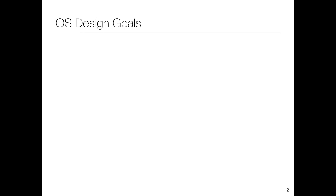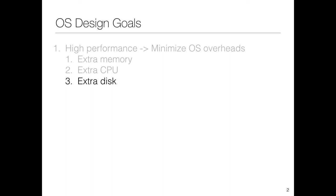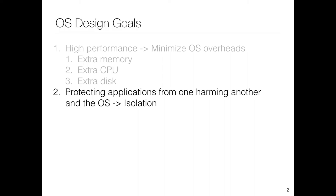So let's say you want to design an operating system — what are some things you want to keep in mind? First, you want high performance, meaning you want to minimize the OS overhead. The OS is doing things like helping you context switch between processes, write stuff to disk, and read stuff from disk — it's managing RAM, CPU, and disk. You want to minimize that overhead, reducing the extra memory, CPU, and disk requirement of the operating system.